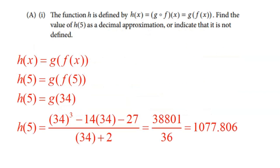Let's do the first part of Part A. We're going to take 5 and plug it in for X. Following our rules for composition of functions, we start on the inside — we first figure out what F of 5 is. Going to our table, with an input of 5, the output is 34. Now we have to figure out what G of 34 is, so we plug 34 into function G: 34 cubed minus 14 times 34 minus 27, all divided by 34 plus 2. You are allowed to use a calculator, so don't waste time doing this by hand. The numerator is 38,801 and the denominator is 36. Dividing gives a decimal approximation of 1,077.806. Notice how I'm showing all of my work — that's what they expect for a perfect score on the AP exam.